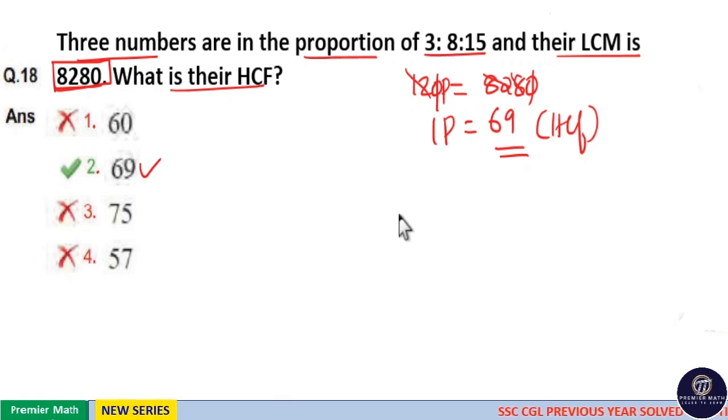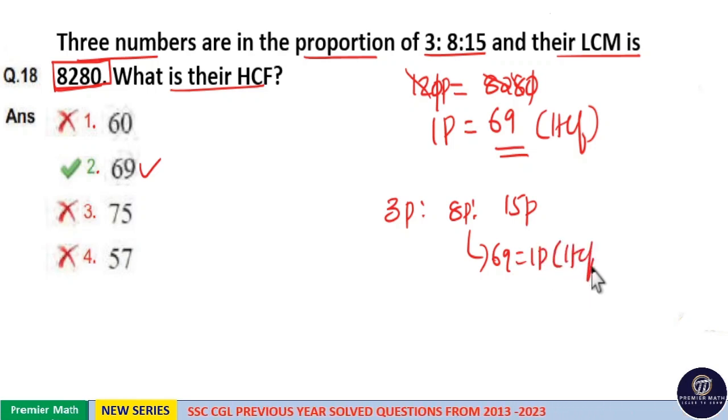Here this 3 is to 8 is to 15 means 3 part is to 8 part is to 15 part, that is here 69 is 1 part which is the HCF.